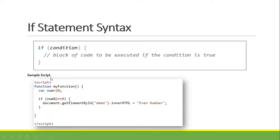This is the sample script in JavaScript using the if statement. We write 'if', and the condition is 'num % 2'. The modulo operator divides num by 2 and gets the remainder. Then using '==' equal to 0 — it means if the remainder of num is equal to 0, it will proceed into our block of code. When true, the output of our script will be 'even number'. So document.getElementById('demo').innerHTML is equal to 'even number'. And don't forget the closing curly brace.